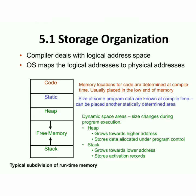The operating system maps the logical address space into the physical address space — it takes the program from the drive and loads it into RAM. The compiler then occupies a block of memory in RAM called the runtime memory or runtime environment. This runtime memory is subdivided into different blocks as shown in the diagram.